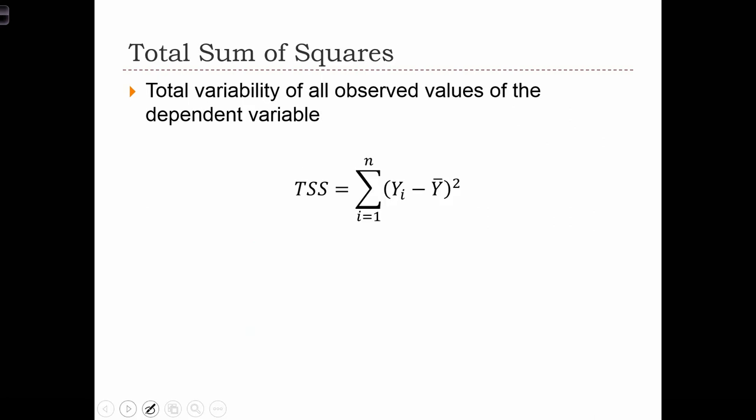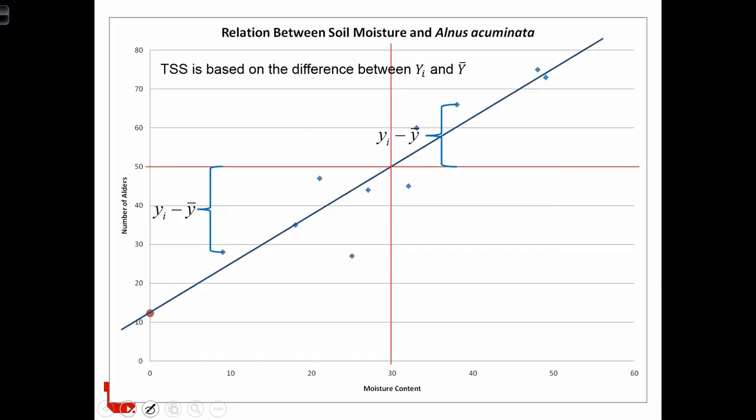So the total sum of squares is just the total variability of all the observed values of the dependent variable. So for our sample of n observations, we are just going to take the sum of the squared deviants of our Y data, and that's the total sum of squares. We've seen this many times over, just the sum of yi minus y̅ squared.